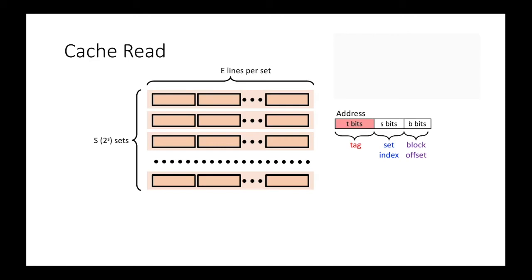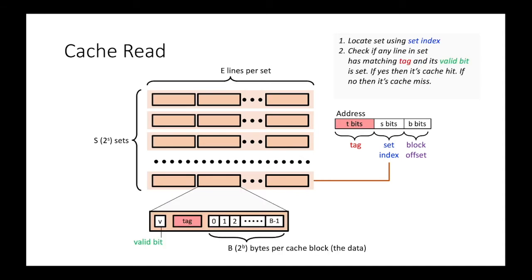When accessing cache, the set index bits are first used to locate the target set. Once the target set is known, we check if any cache line has a matching tag and its valid bit is set. If both conditions are true, it's a cache hit. Otherwise, it's a cache miss, meaning the cache doesn't have the data or instruction for that address.